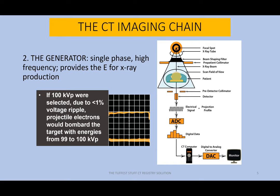It's important to know that the generator is single phase high frequency because that type of generator has a very small voltage ripple — less than 1%. If 100 kVp were selected at the control console, because of the fact that the single phase high frequency generator has a voltage ripple less than 1%, those projectile electrons produced in the production process would bombard the target with energies from 99 to 100 kVp, almost exactly the same. That means we have the beginning of the production of a very mono-energetic beam.